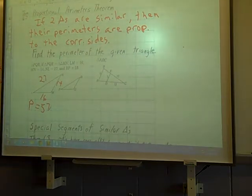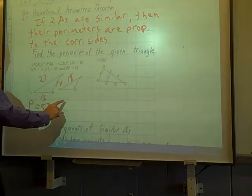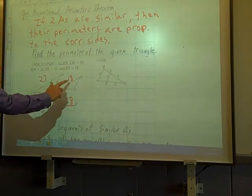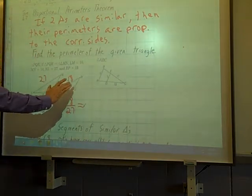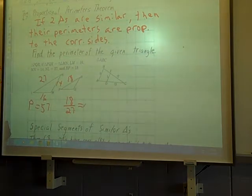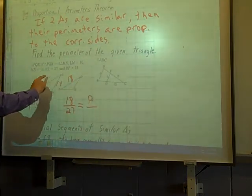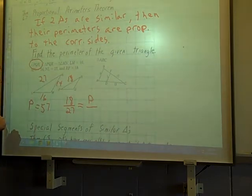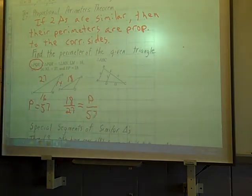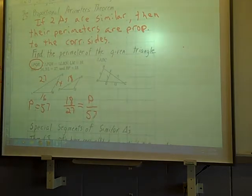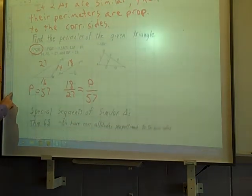And RP, this side right here, is 18. Now 18 corresponds to 27. The perimeter is proportional to the sides. The perimeter of triangle PQR, which is what we want to find, over the perimeter of triangle LMN, that's the proportion you would use to solve that.